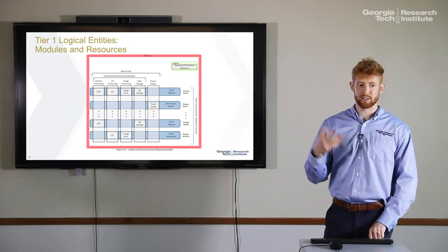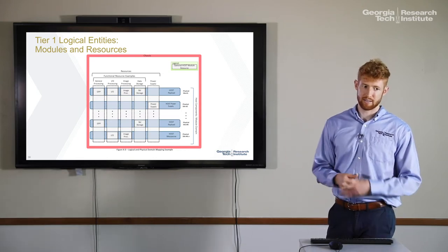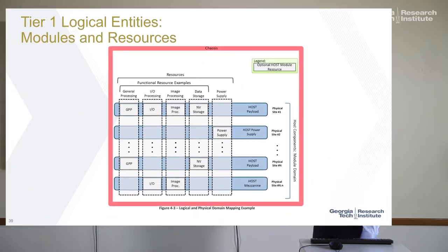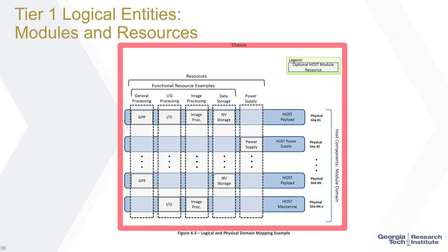There are also logical entities, one of which is resources. At the Tier 1 level, we claim functional resources, just saying that your Tier 2 needs to enable the use of these different functional resources. Some examples are general processing, IO processing, image processing, data storage, and also the power supply as a functional resource. All of these need to be encapsulated within these modules.